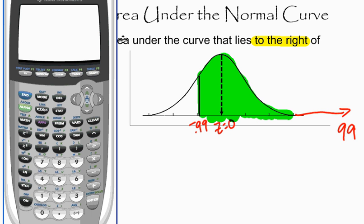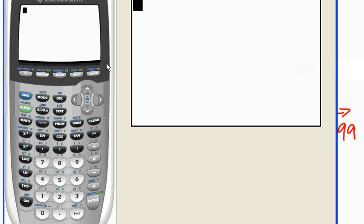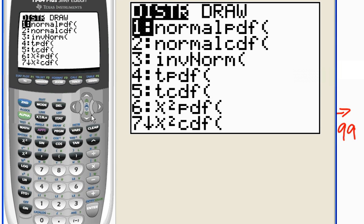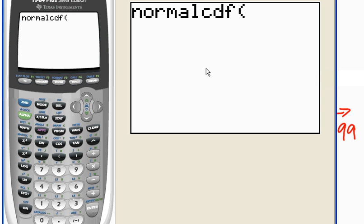Again, if you want more explanation about that, watch some of my previous videos. So I'm going to go full screen here. I'm going to type in 2nd VARS to get to my variables menu and go down to number 2, normalCDF. Again, this should be familiar if you watched some of my previous videos.